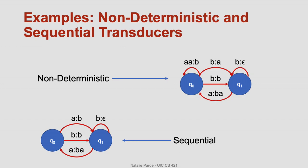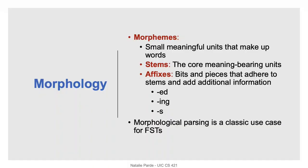Here are some examples of non-deterministic FSTs and sequential transducers to illustrate that point. In the non-deterministic FST, you can see, for example, that a B coming out of Q0 could be mapped to either an A or a B as its output. In the sequential transducer, on the other hand, there's only one possible output mapping for a B coming out of Q0.